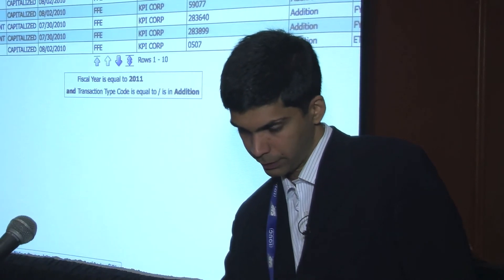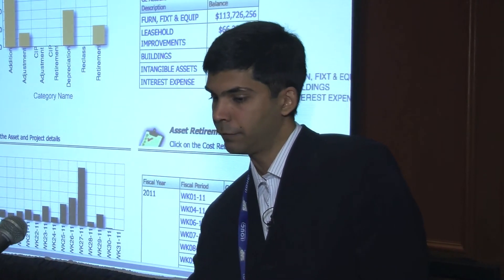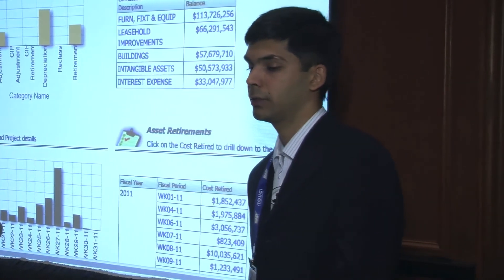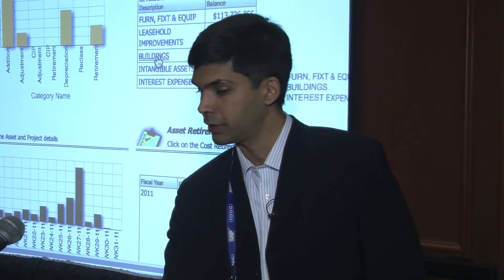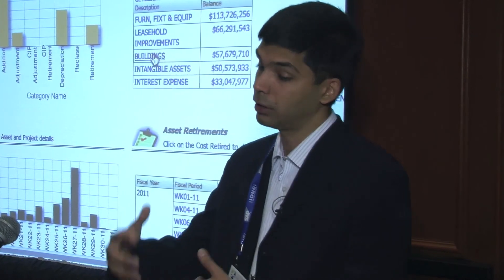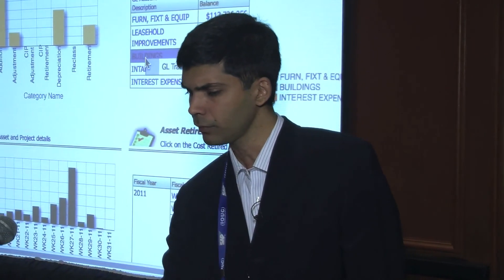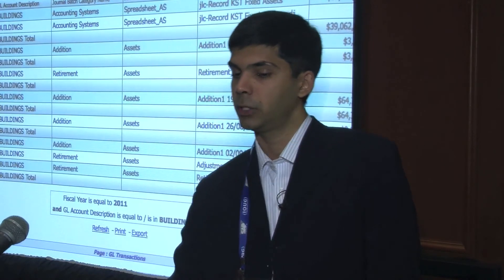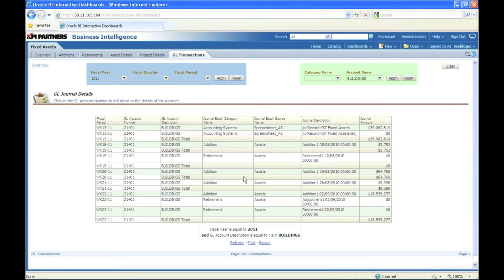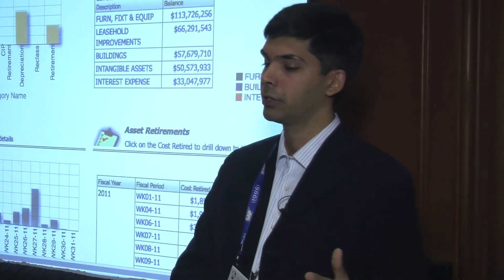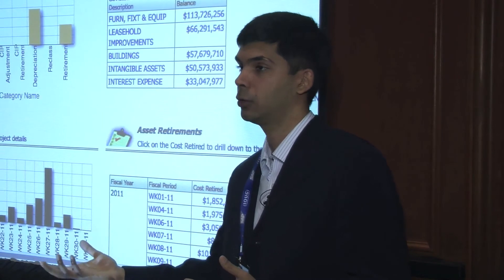Let's go back to the overview page and look at other GL-related information. We have a report called the Top Five Fixed Asset Account Balances — a typical report users can use in their reconciliation process. This tells me the different fixed asset related accounts in my company. For example, there's an account called Buildings tracking all buildings as assets, and the report shows the account balance for a particular period. Drilling into that takes you to a GL detailed report showing information at a GL journal level.